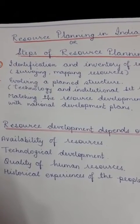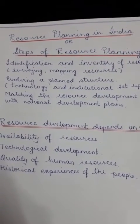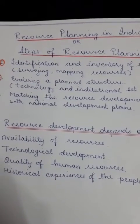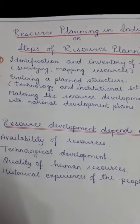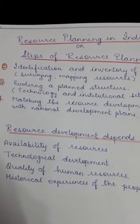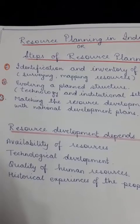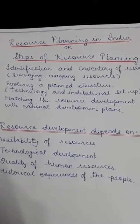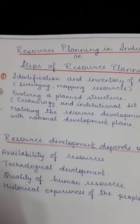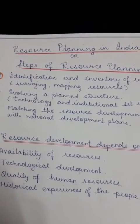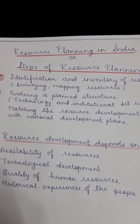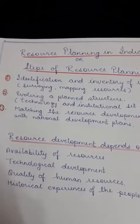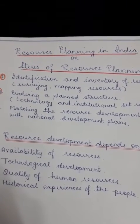The second step is evolving a planned structure, which involves technology and institutional setup with skills — how to access and develop resources with available technology. The third step is matching resource development with national development plans, so that there is a perfect coordination between resource development and national development.